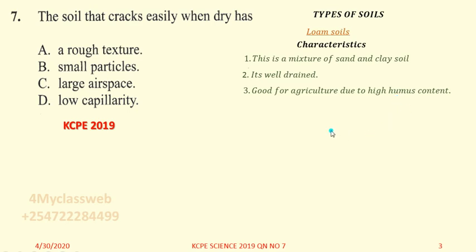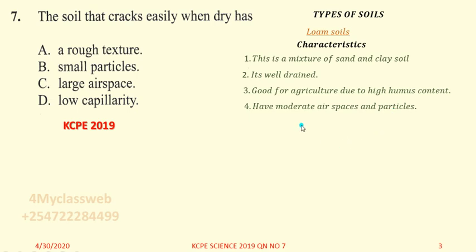Loam soil is good for agriculture due to its high humus content. Humus consists of dead decaying matter on top of the soil, such as dead leaves and dead animals. It has moderate air spaces and particles — the word moderate means they are in between, not very small and not very large. Loam soil is also well aerated, meaning the circulation of air is so good that when you plant or sow a seed, that seed will germinate well because germination requires air.